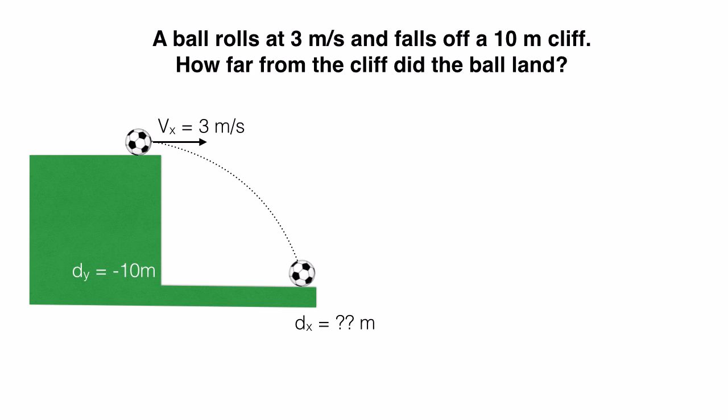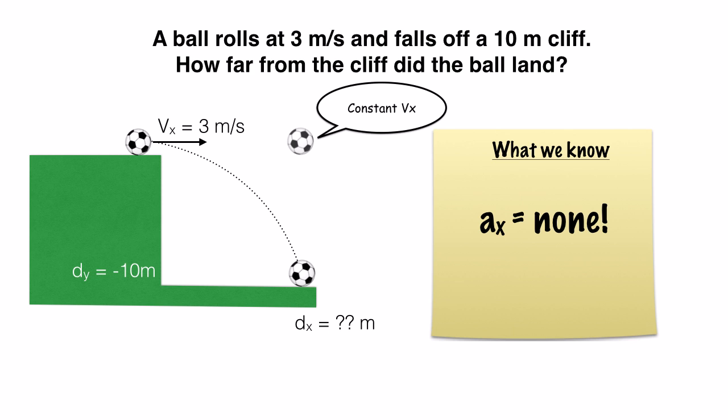Now, there's some other information that we need to extract from this. One of which is our acceleration in the x is going to be zero. It's a constant velocity. Nothing's accelerating it in the x direction.